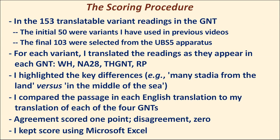So how did I score these translations? I looked at 153 translatable variant readings in the Greek New Testament. 50 of those are ones I had used in previous videos — you can see them in my ASV versus ESV, KJV versus ESV, or NRSV versus ESV videos. The final 103 I selected by looking at the United Bible Society's fifth edition apparatus. For each variant, I translated the readings as they appear in each Greek New Testament, highlighted the key differences, and then compared each English translation to my translation of each of the four Greek texts. Agreement scored one point, disagreement zero, kept in a Microsoft Excel spreadsheet.